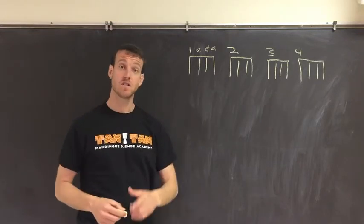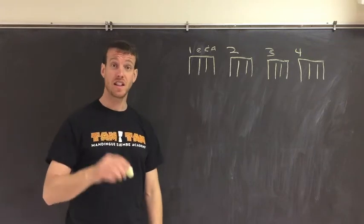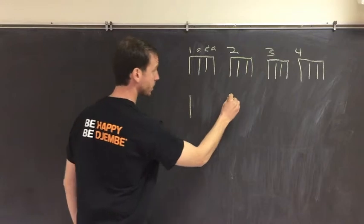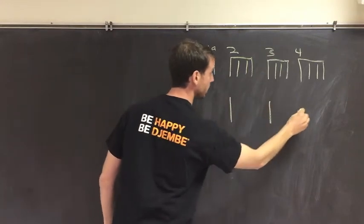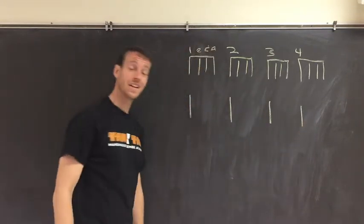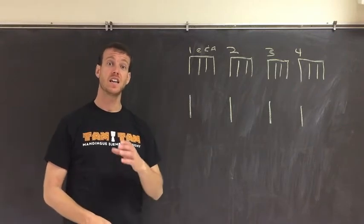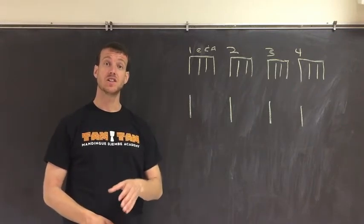So now, let's take a look at ternary. Let's start the same way. Let's draw our four downbeats. So we'll do one, two, three, four. And now what we're going to do for ternary is we're going to divide each beat into groups of three pulses instead of four.